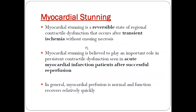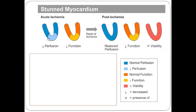Stunned myocardium is a reversible state of regional contractile dysfunction that occurs after transient ischemia without ensuing necrosis. Whenever ischemia occurs, for a period of time the myocardium function is affected. As you can see here, this part of the left ventricle is receiving decreased perfusion during acute ischemia. Because of decreased perfusion, to conserve energy, the function is also lost during this time — so there is decreased function as well.